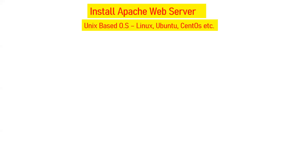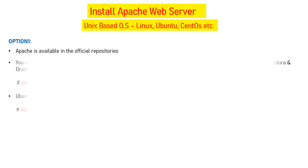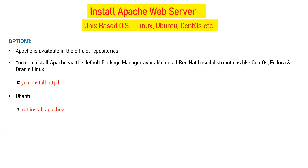For installation of Apache on Unix-based OS systems like Linux, Ubuntu, CentOS, etc., we have two different options. Option one is that Apache is available in the official repositories. If you have bought your Linux from Red Hat, they will provide you the official repositories and you can directly download your software from there. You can install Apache via the default package manager on all Red Hat-based distributions like CentOS, Fedora, and Oracle Linux by executing the command: yum install httpd from root. It will automatically install your Apache server from the official Red Hat repository.